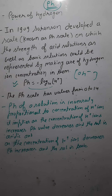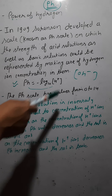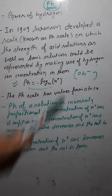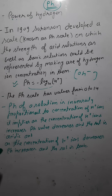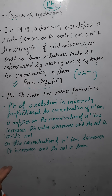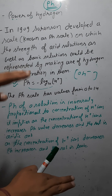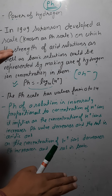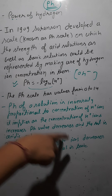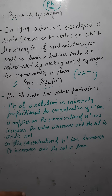pH of a solution is inversely proportional to the concentration of H⁺ ions. As the concentration of H⁺ ions increases, pH decreases — the solution is acidic. As the concentration of H⁺ ions decreases, pH increases — the solution is basic.